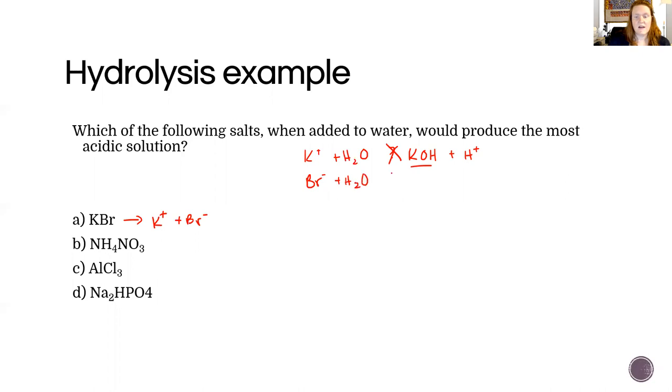Bromine is an anion so we're going to take the H and leave behind the OH. That's a strong acid so that doesn't happen, so this would be neutral.